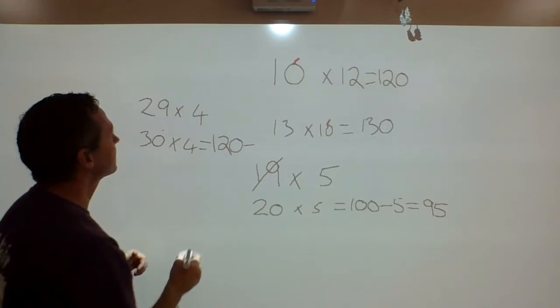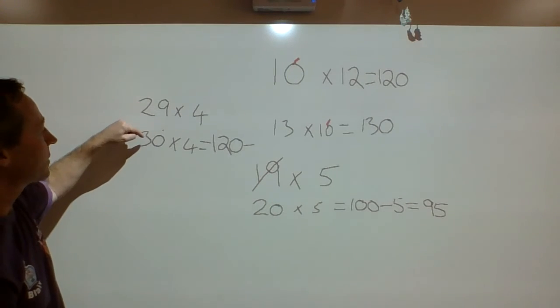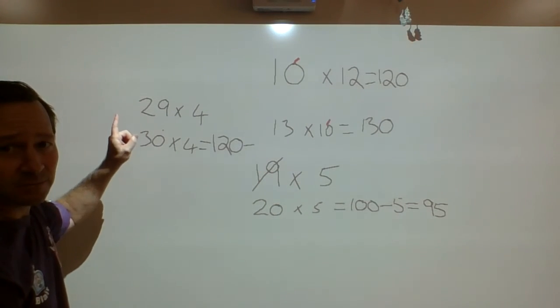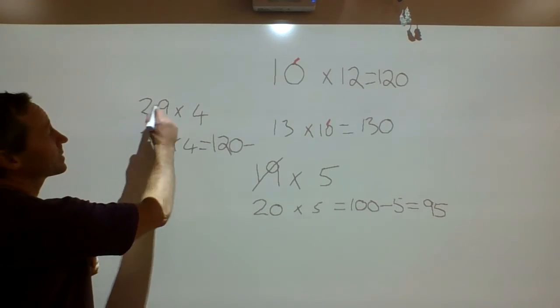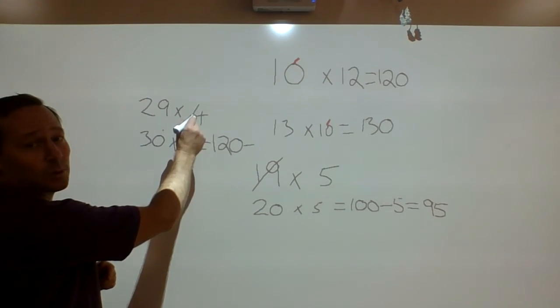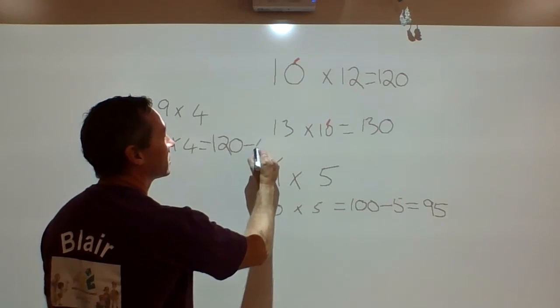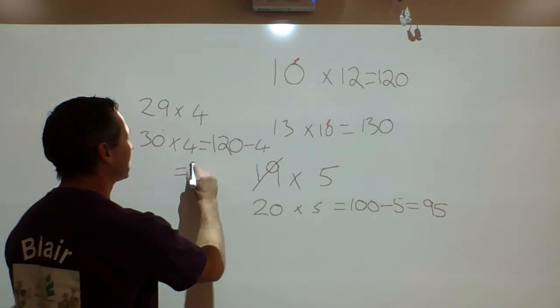And then, 29 from 30 is 1, a jump of 1. But because there's 4 lots that I do, 4 times 1 is 4, so I minus 4. So my answer would be 116.